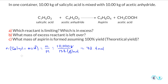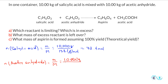Second, the moles of acetic anhydride. Using the same formula, we have 10,000 grams divided by the molar mass, which is 102.1 grams per mole. Cancel the grams, and we have 98.0 moles. I've rounded off the numbers slightly, going with three significant figures to keep the numbers simpler.